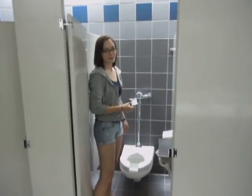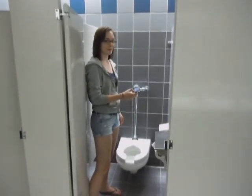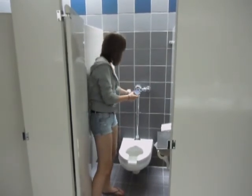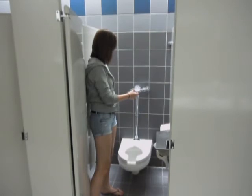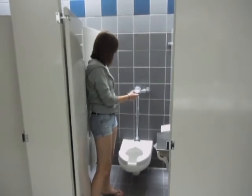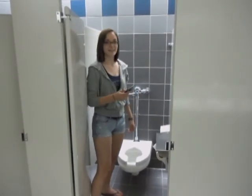In order to find the flow rate of the toilet, first we'll time how long it takes for one flush. Seven seconds.